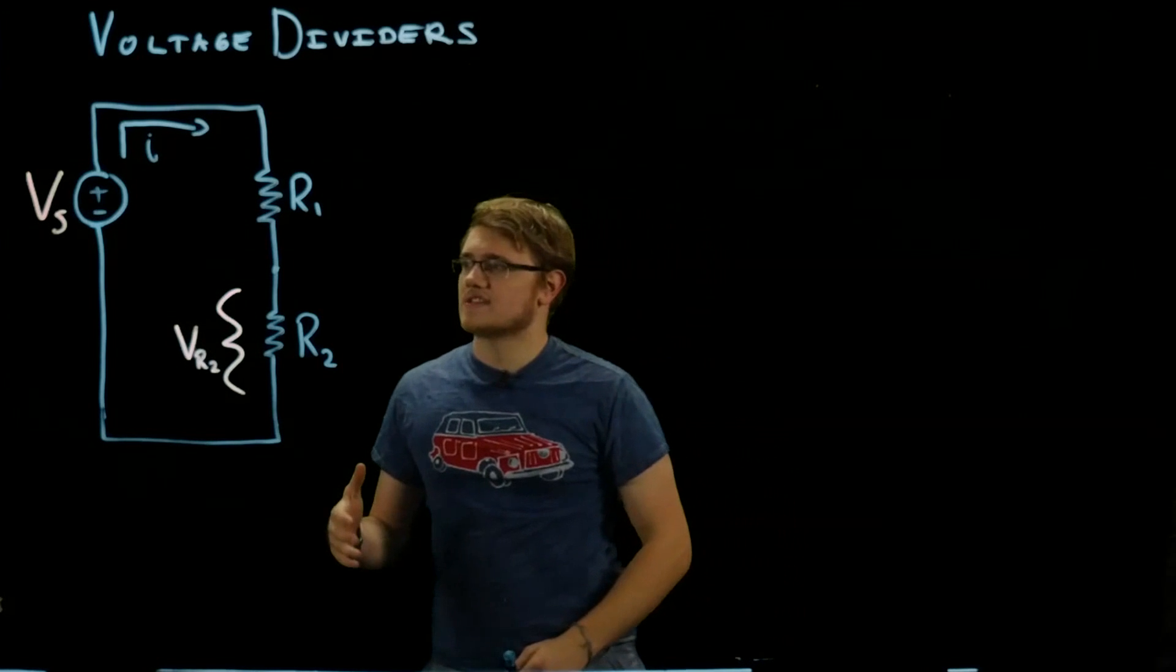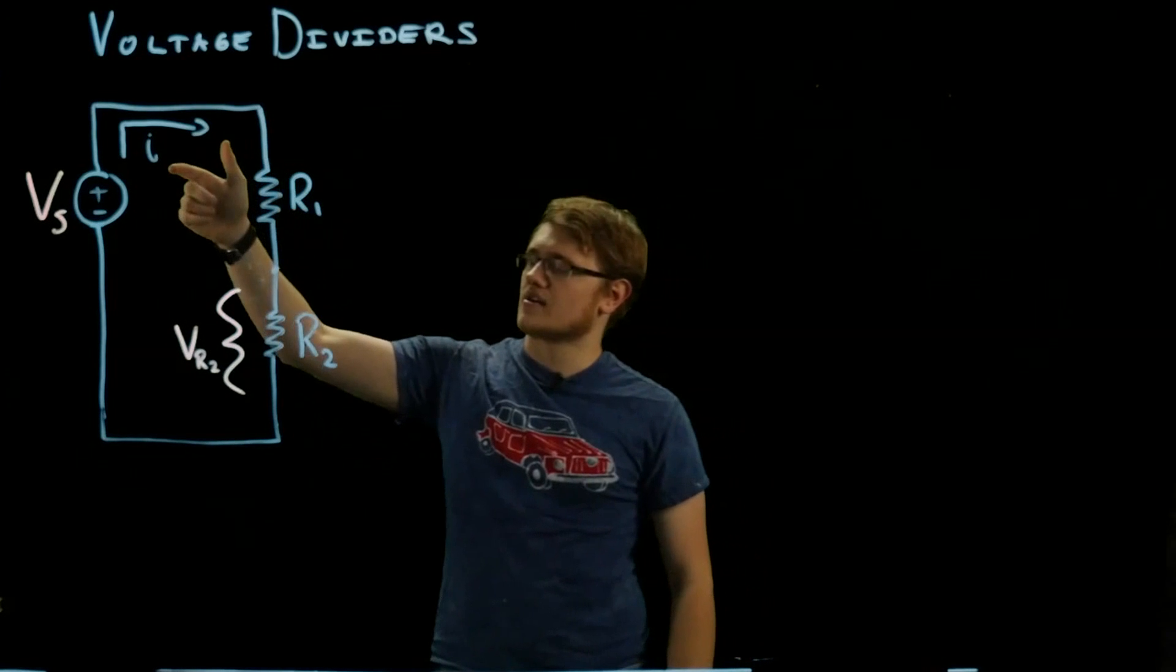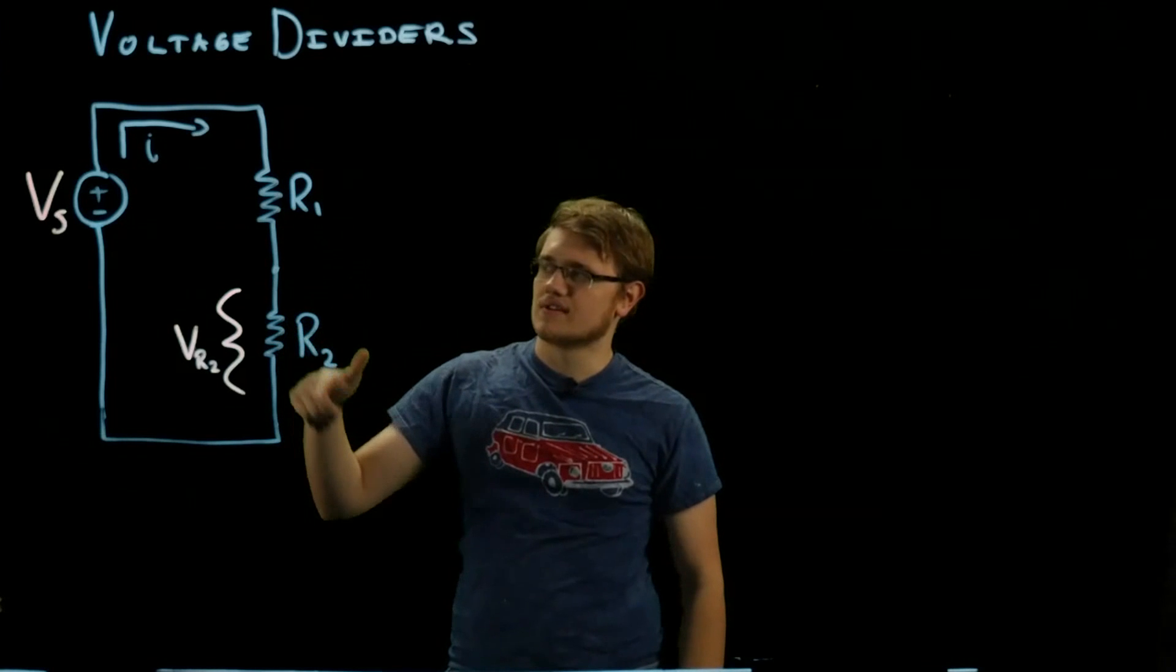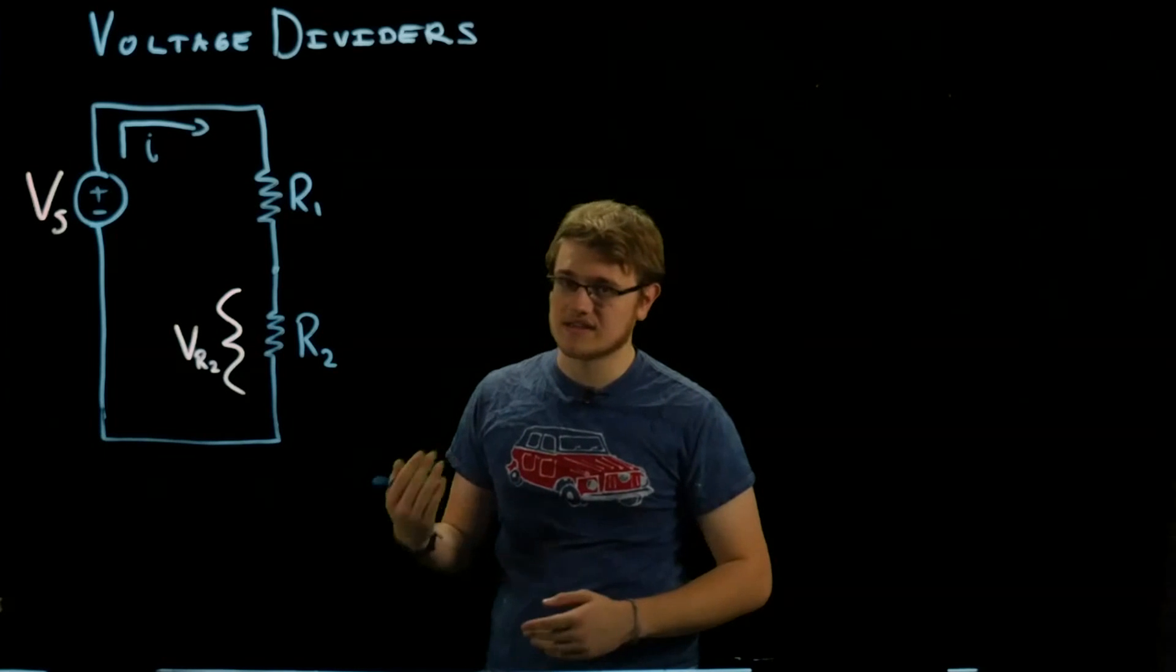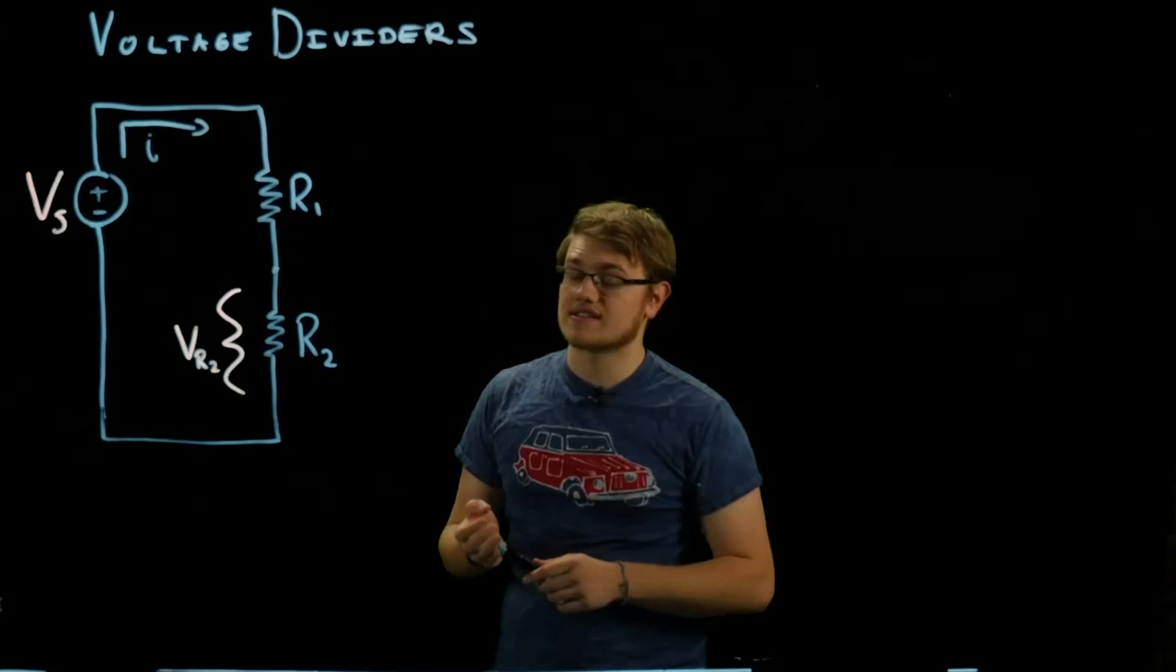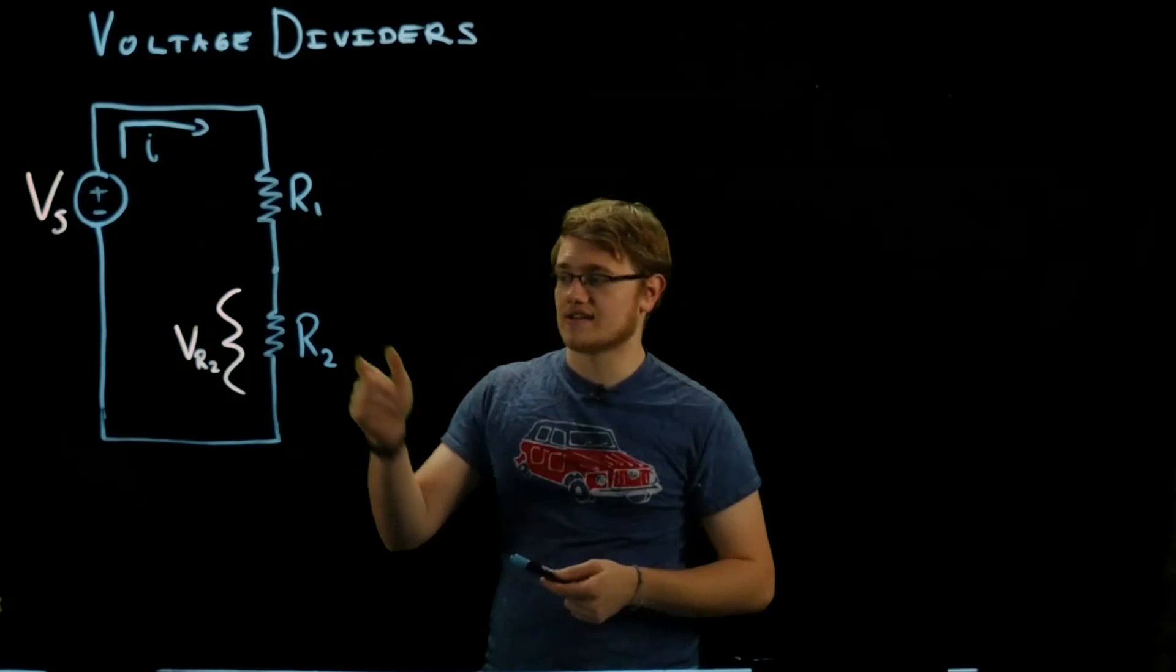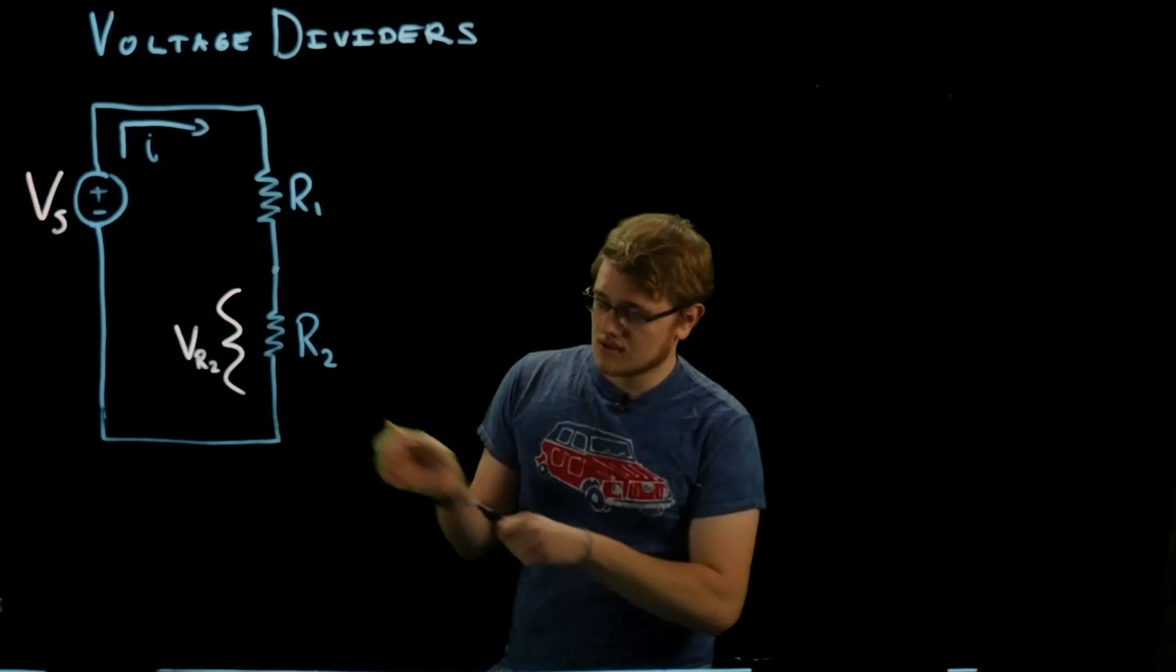What we know with this circuit is that the current going through R1 and R2 is going to be the same, because resistors in series share the same current. They don't share the same voltage, which is why we need to find this voltage.